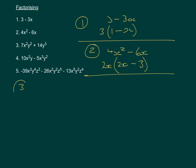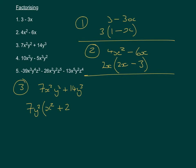Number 3 is 7x²y² + 14y³. Both coefficients can be divided by 7, so we take out a 7. Both terms also contain y² as the smallest power of y, so we take out y² as well. Inside the bracket, the first term leaves x², and the second gives 2y, leaving us with 7y²(x² + 2y).